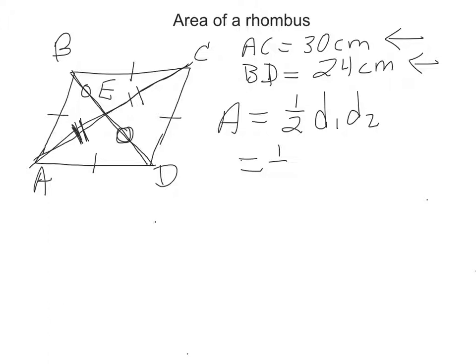So to find the area, we're going to do one half times the first diagonal which is 30, times the second diagonal which is 24. And all we have to do now is just follow the order of our operations. We are multiplying straight through. So one half of 30 is 15.